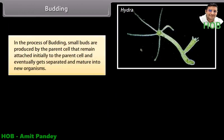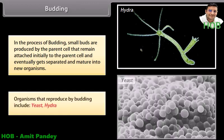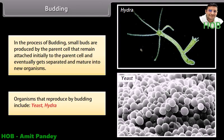Budding. In the process of budding, small buds are produced by the parent cell that remain attached initially to the parent cell and eventually get separated and mature into new organisms. Organisms produced by budding include yeast and hydra. The following diagram shows the bud developing on parent hydra.